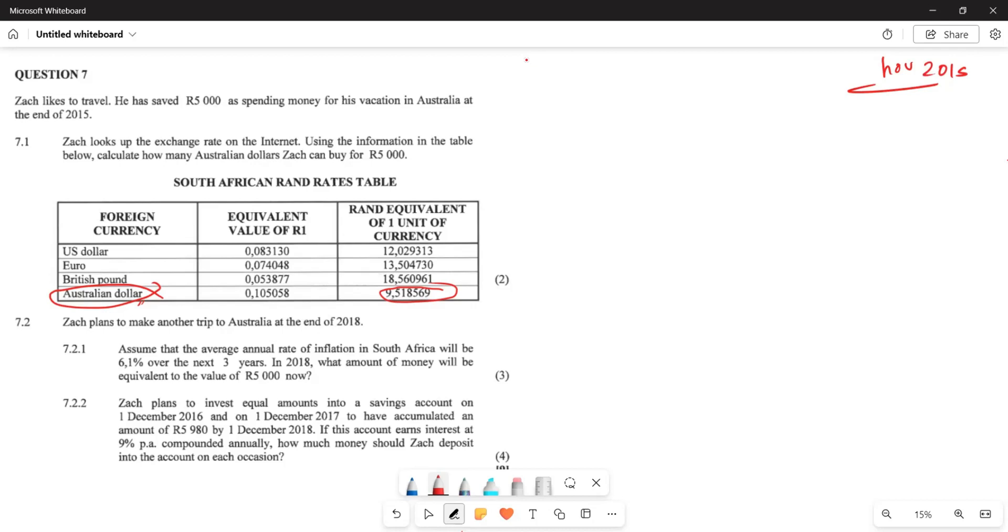Now, they say Zach likes to travel. He has saved $5,000 as spending money for his vacation in Australia at the end of 2015. Let's look up the exchange rate on the internet using the information in the table below. Calculate how many Australian dollars Zach can buy with $5,000.